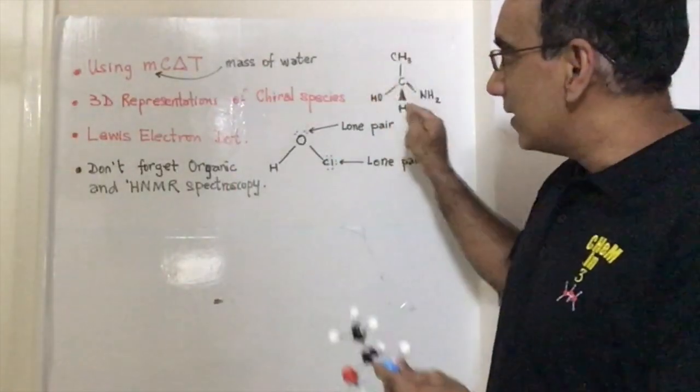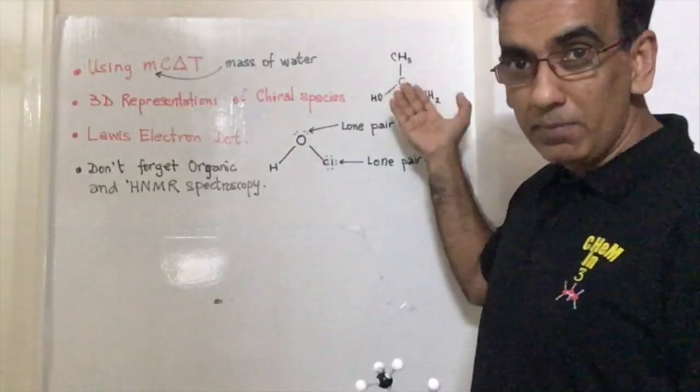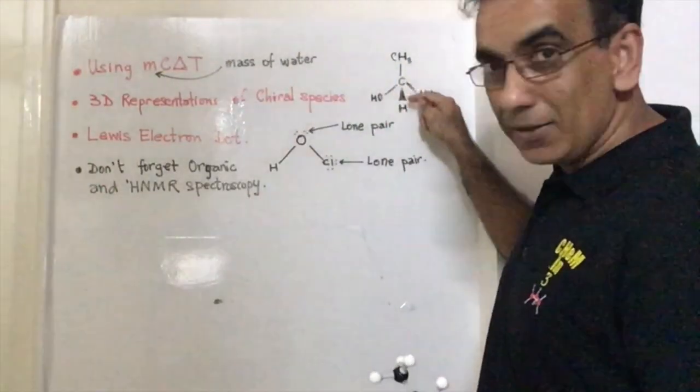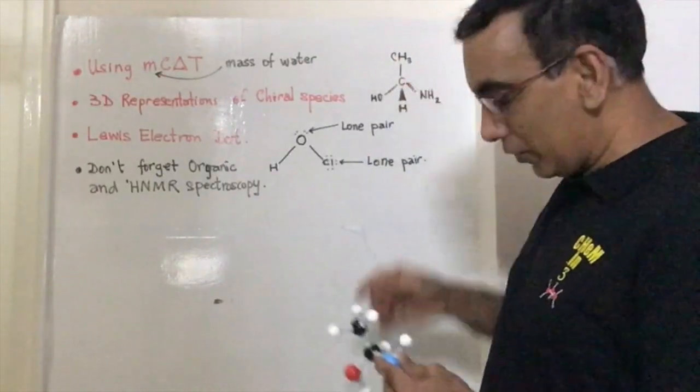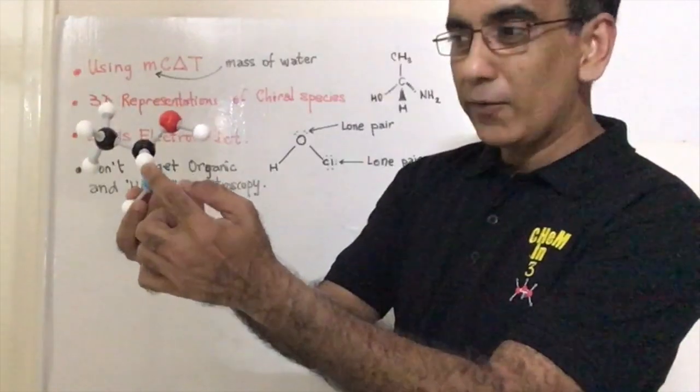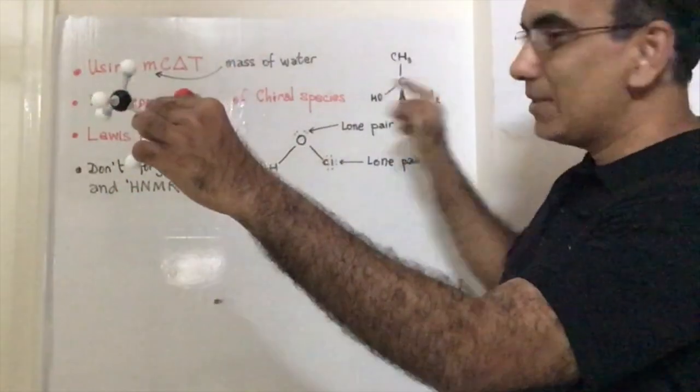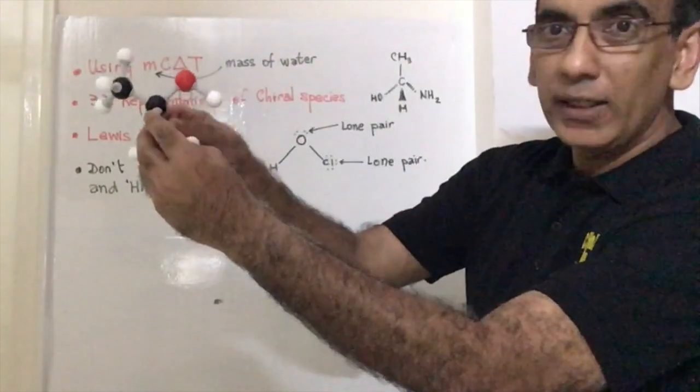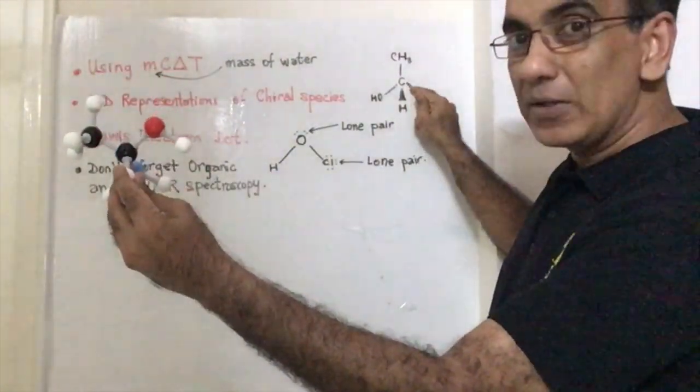And it can be represented, the 3D structure can be represented in this way on paper, with this solid line at the bottom here representing a bond to a hydrogen, which is this bond here in front of the plane. And the NH2 is behind the plane, here I'm holding it behind, that's behind the plane, and it's represented by the dotted line.